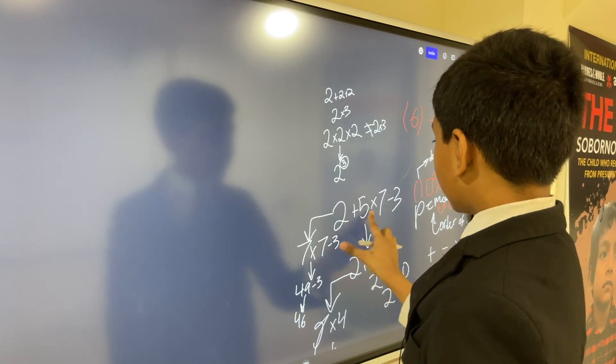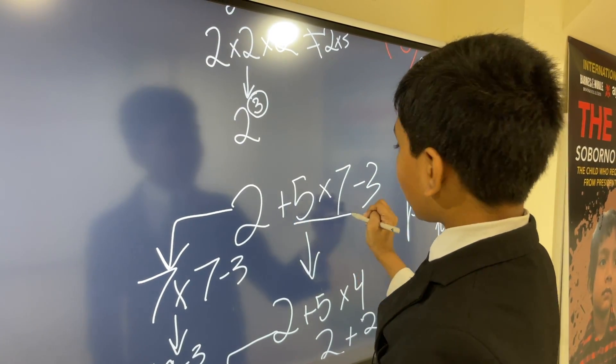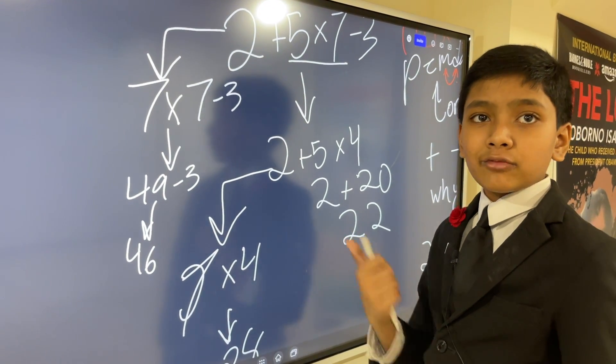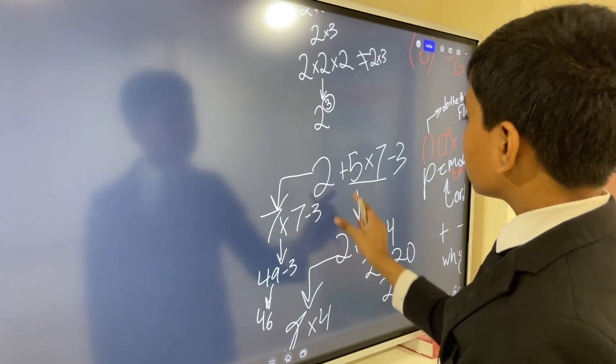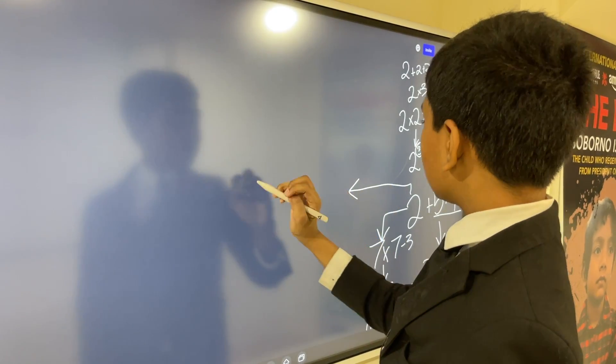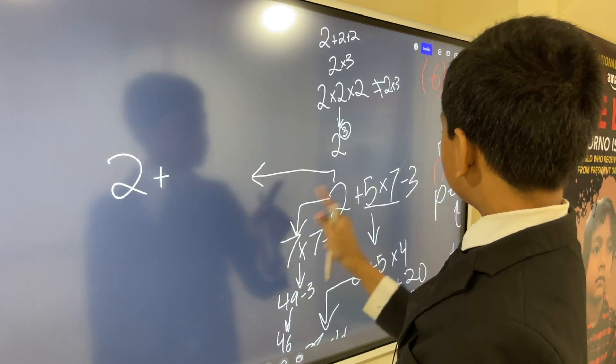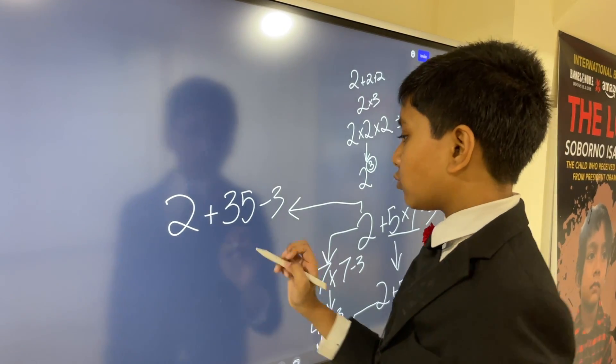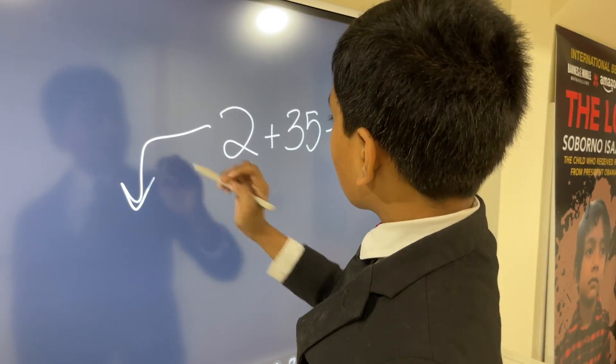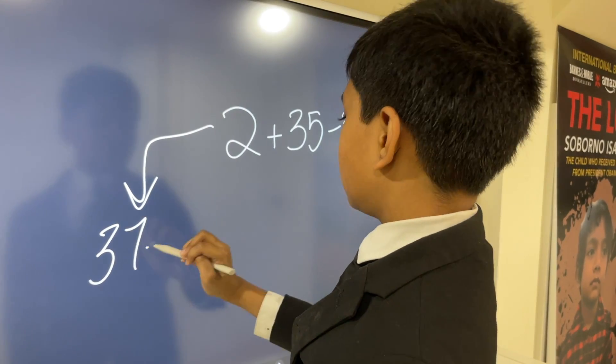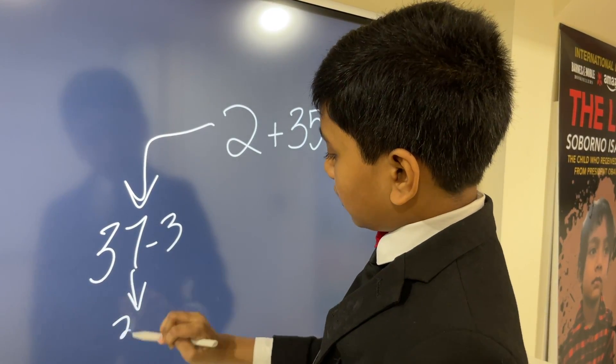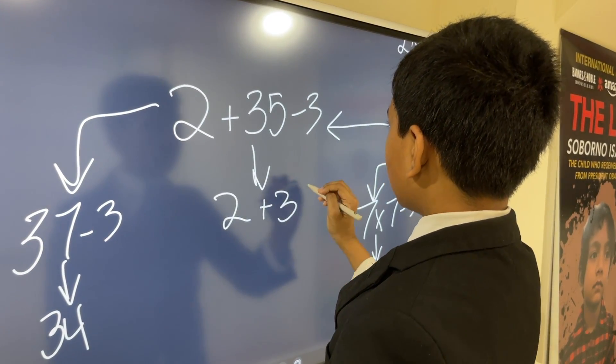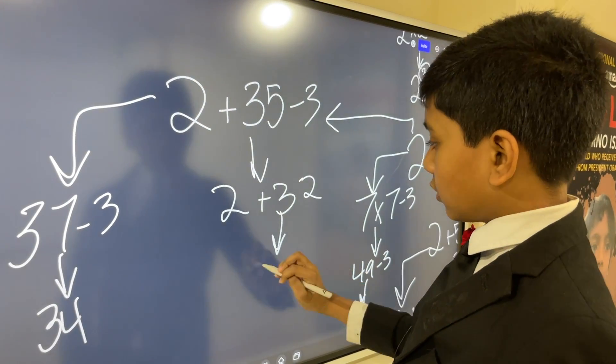Because, the real correct answer would be to do the multiplication first instead of doing the addition or subtraction. Like, everyone else here said. The real solution would be to do 2 plus 5 times 7 is 35 minus 3. And, then, you could do addition and subtraction however you please. If you do addition first, you have 37 minus 3 is 34. If you do subtraction first, you get 2 plus 32, which is also 34.